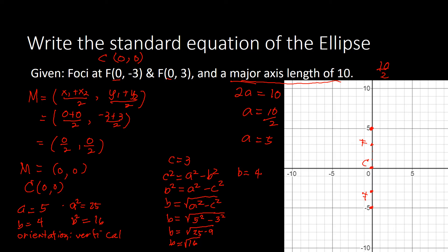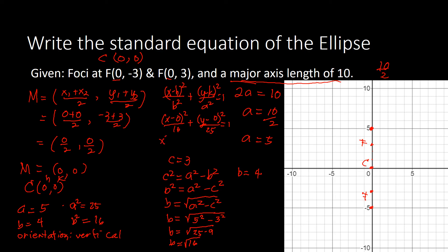Since the orientation is vertical, we use the form: (X − H)²/B² + (Y − K)²/A² = 1. Plugging in with center (0,0), B² = 16, and A² = 25: X²/16 + Y²/25 = 1. That is our standard equation of the ellipse.